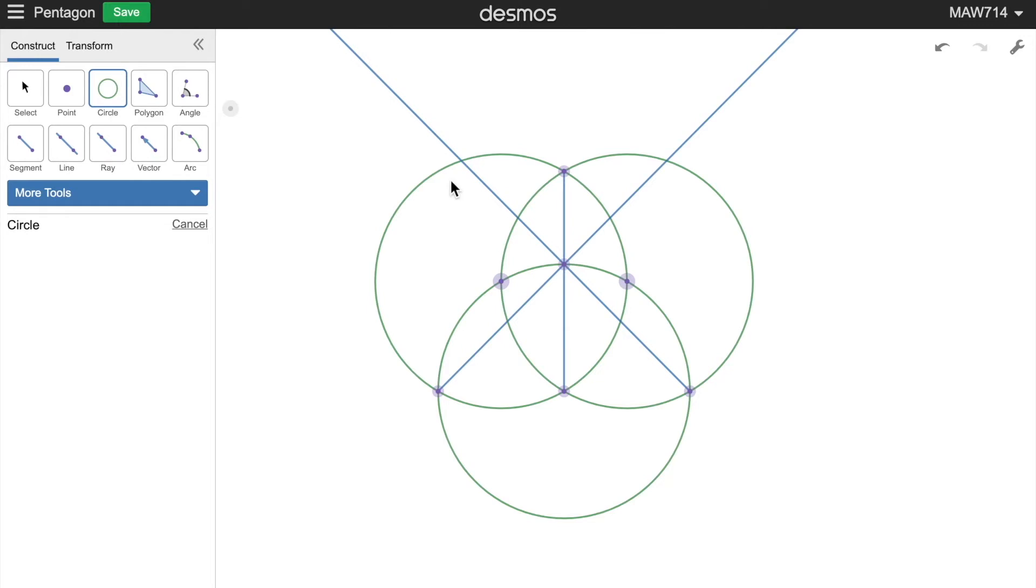We can achieve this by drawing a circle from this point to this point, then this point to this point. And now we have this point which is going to be the last point for our pentagon.